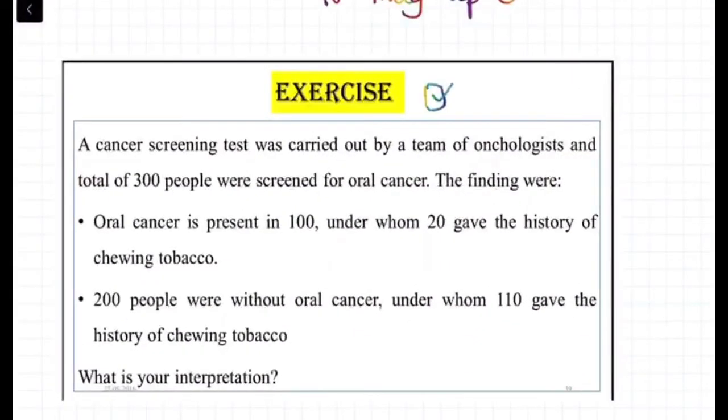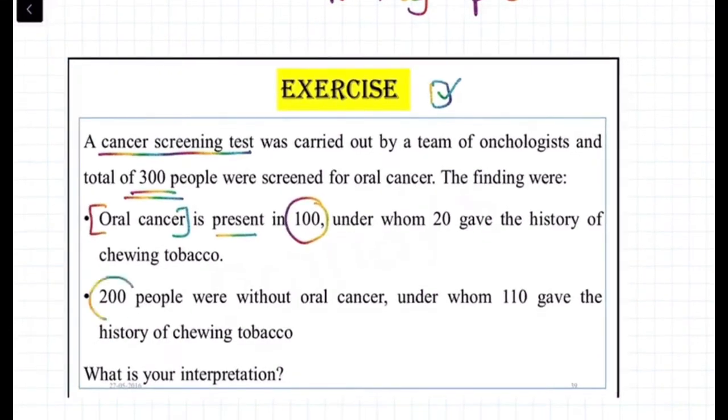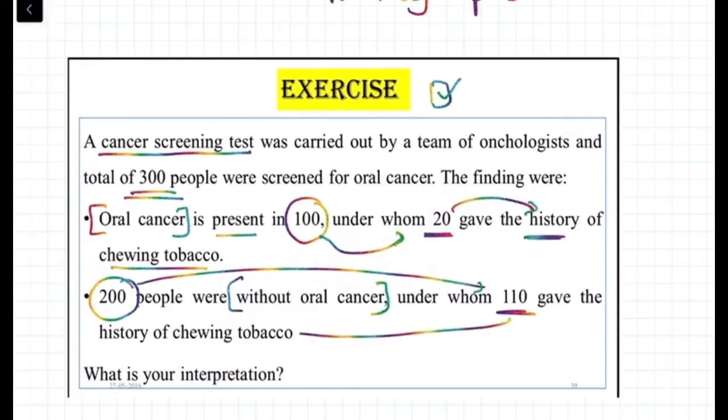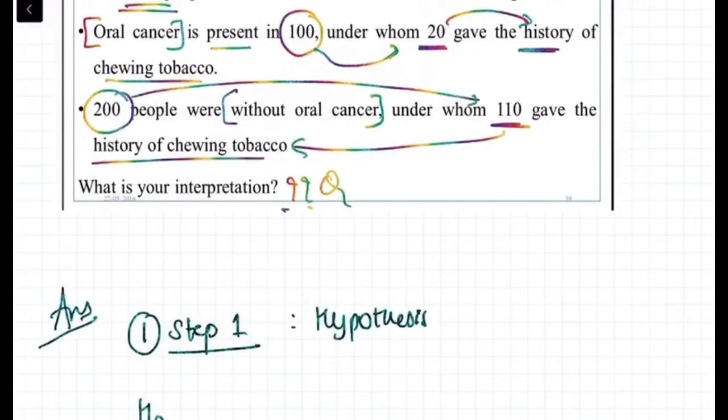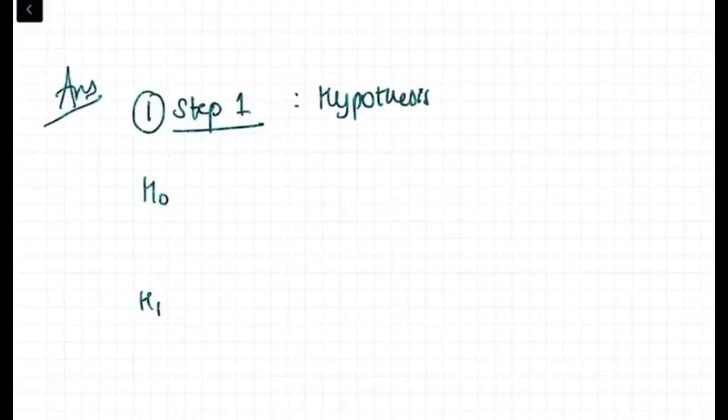And then we will be assessing it. So exercise of cancer screening test was carried out by a team of oncologists. Total 300 people for oral cancer findings. Oral cancer is present in 100 under whom 20 gave the history of chewing tobacco. 200 people without oral cancer under whom 110 gave the history of chewing tobacco. What is the interpretation? Such type of sum we need to calculate chi-square.